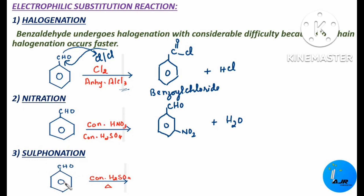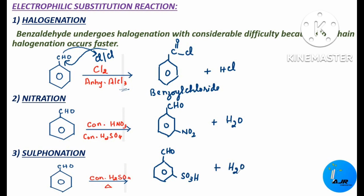Next is sulfonation. When benzaldehyde is heated in the presence of sulfuric acid, we get metabenzene sulfonic acid. Again the SO3H group goes to the meta position because CHO is meta-directing. The product is metabenzene sulfonic acid plus water.